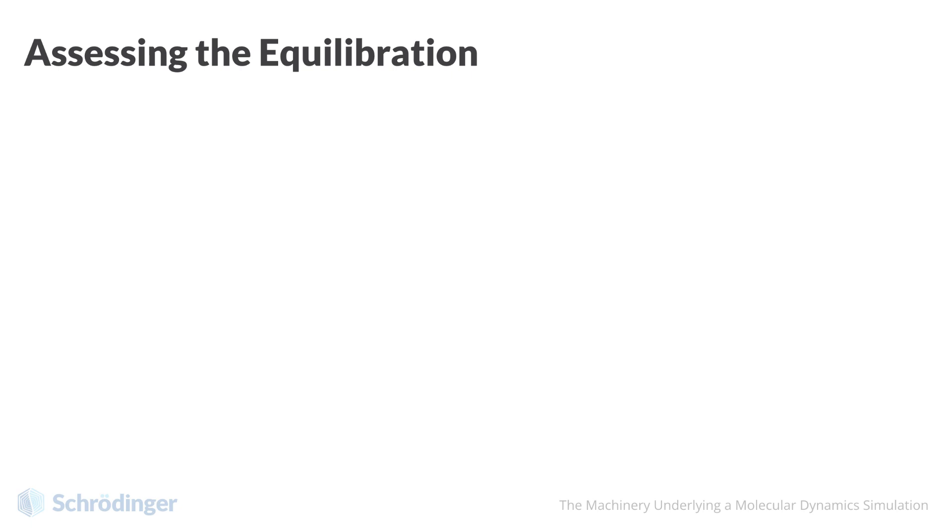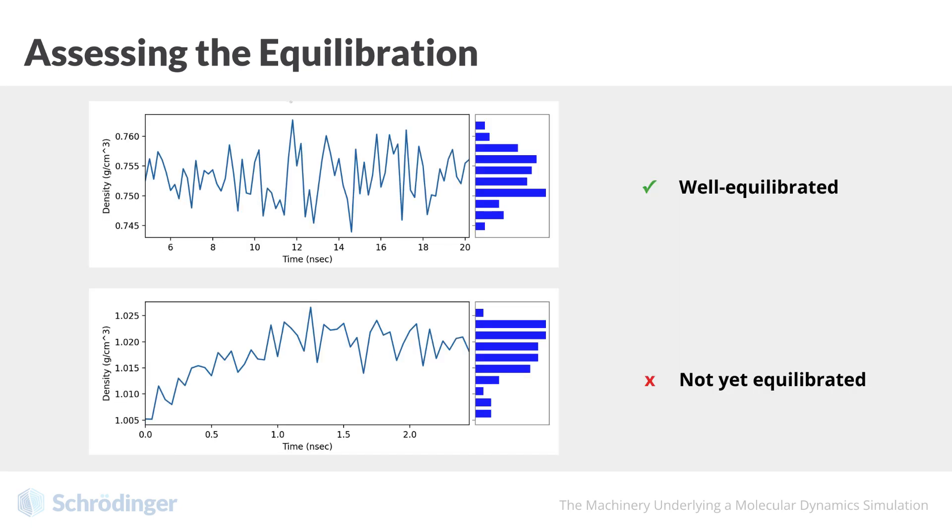Typically, we take one or more properties and analyze a plot of the output versus time. Here, for example, we can see the density versus time for a system that has quickly equilibrated to one that has still not reached an equilibrium state. In the latter, we would want to revisit our initial configuration or run a longer equilibration protocol. In the former, we likely have a well-equilibrated system ready for the production stage.